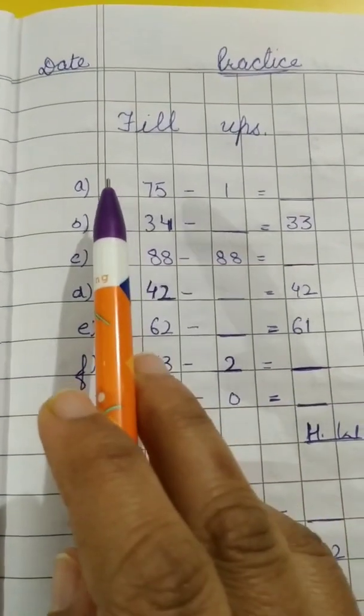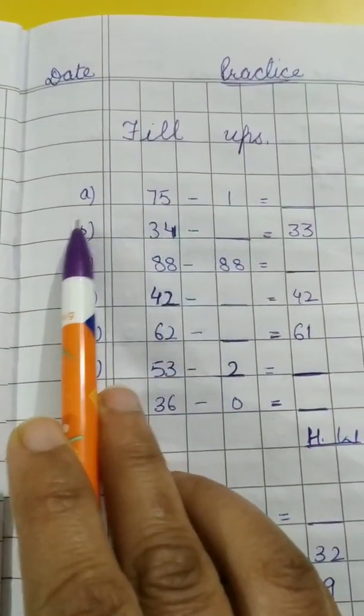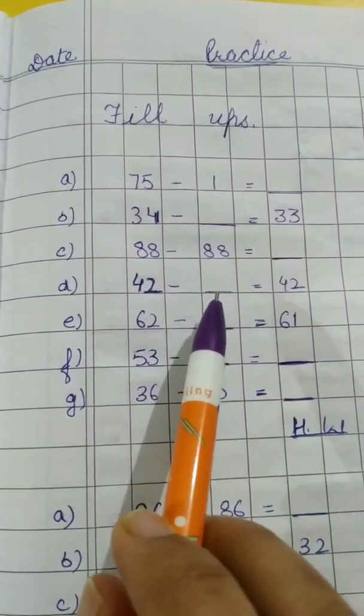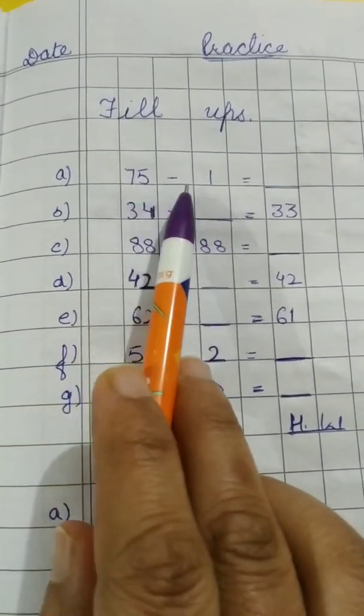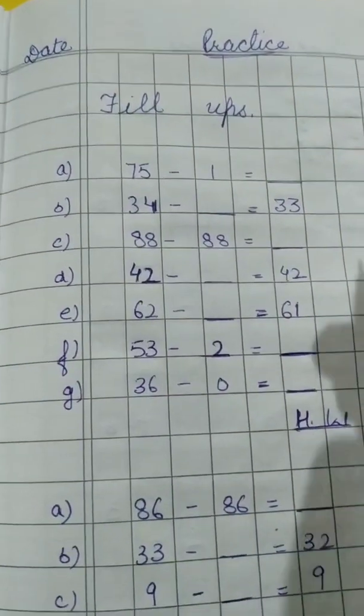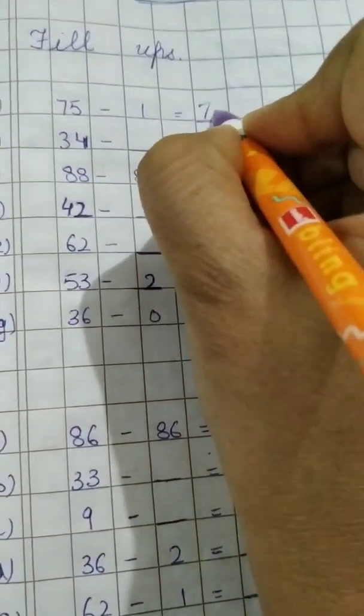Here, first one we are going to do, fill-ups. A part, 75 minus 1. See children, these fill-ups are based on the properties which we did in the last video. When 1 is subtracted from a number, the answer is always the predecessor. The predecessor of 75 will be 74.